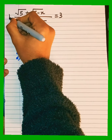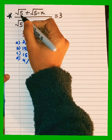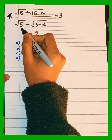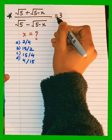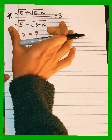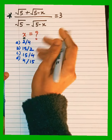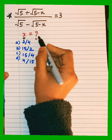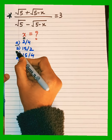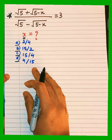Hello everyone. Let's see how we solve this type of question. The question is: square root of 5 plus square root of (5 minus x), all over square root of 5 minus square root of (5 minus x), equals 3. We need to find the value of x. The four options given are 2/4, 15/2, 15/4, and 4/15.